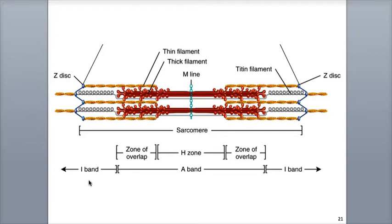The I-band is a lighter region that includes the rest of the thin filaments, shown here in yellow, but not the thick filaments, shown in red. Remember that the letter I is a thin letter, just like the I-band contains only the thin filaments.